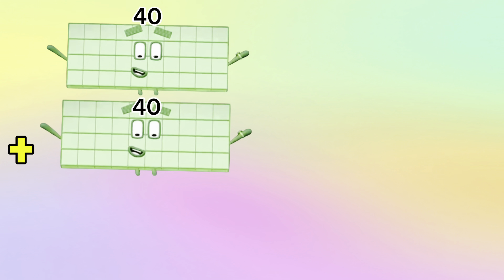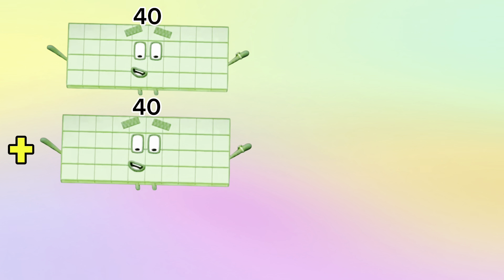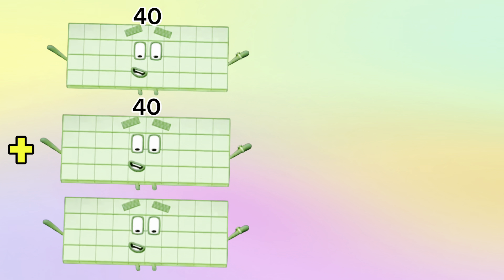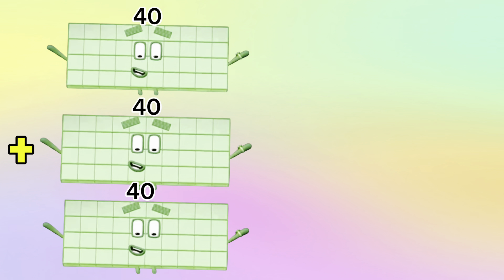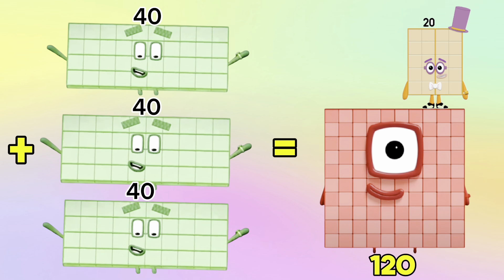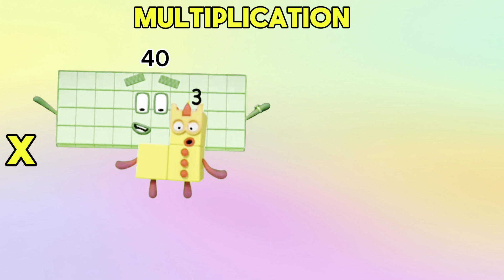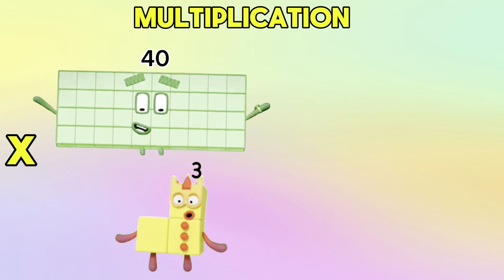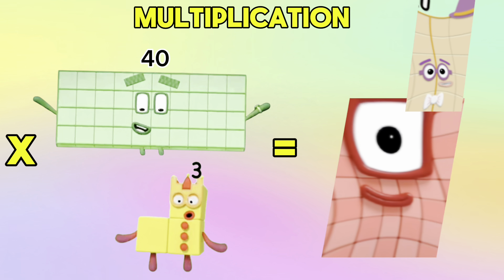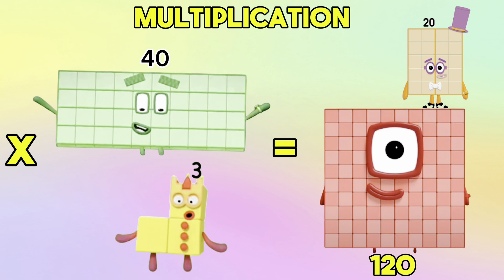40 plus 40 plus 40 is equals to 120. In Multiplication, 40 multiplied by 3 is equals to 120.